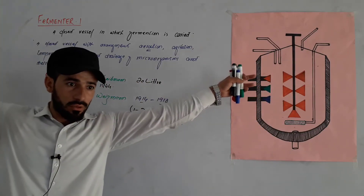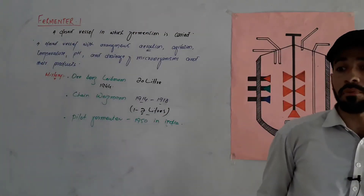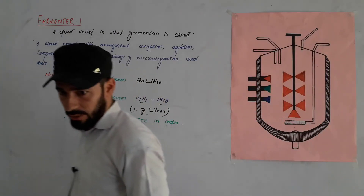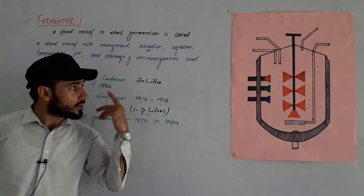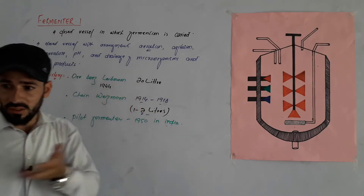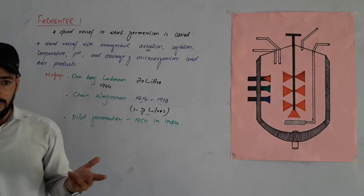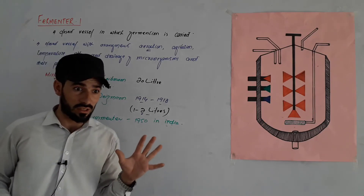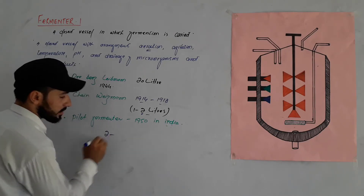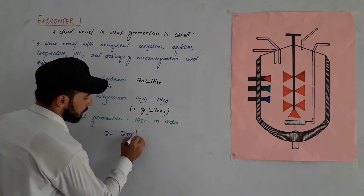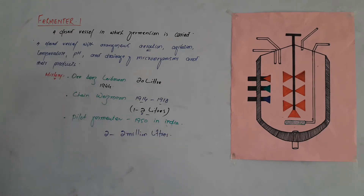The size of industrial fermenters can go from 2 liters up to two million liters. That is the range of fermenter sizes used in industry — from small laboratory scale to massive industrial scale for producing vaccines, drugs, and other products.